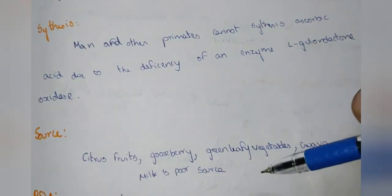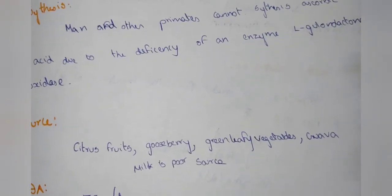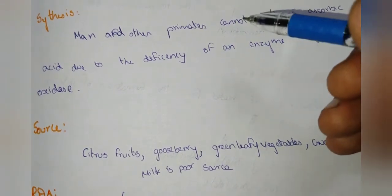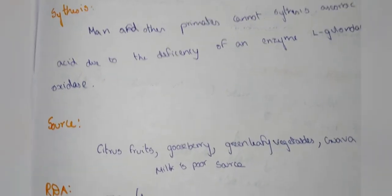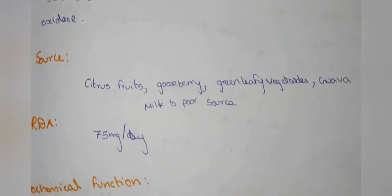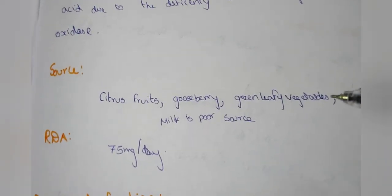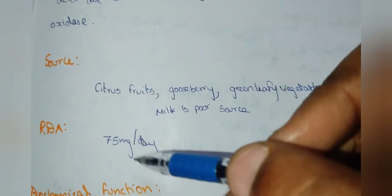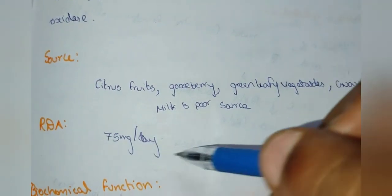Milk is a poor source of Vitamin C. The recommended daily allowance (RDA) is 75 mg per day.